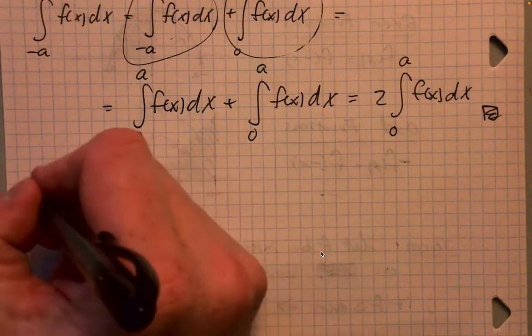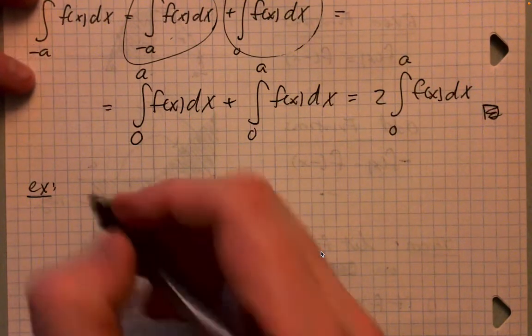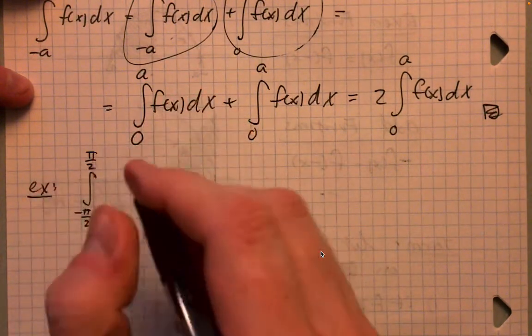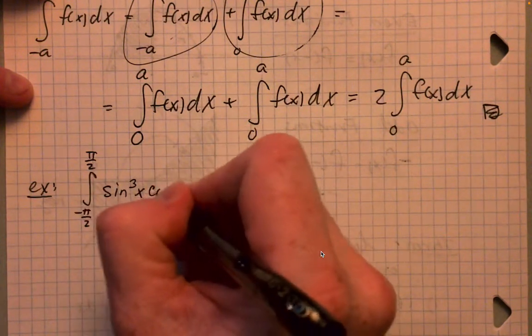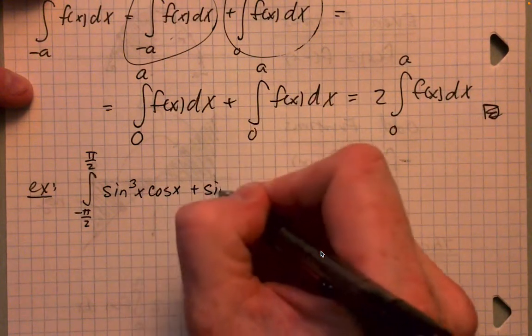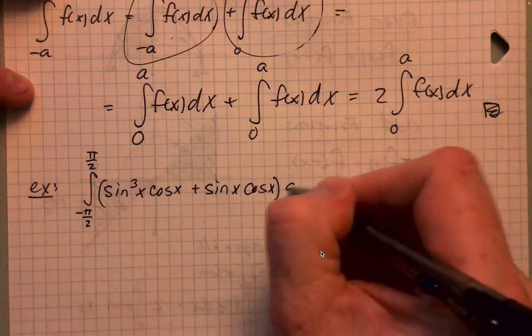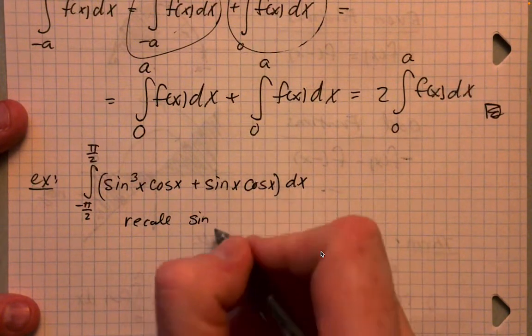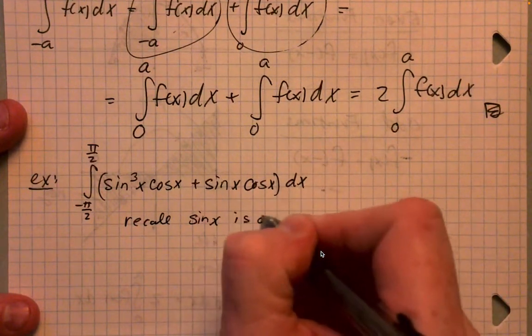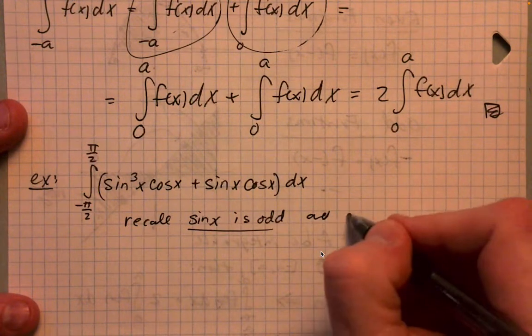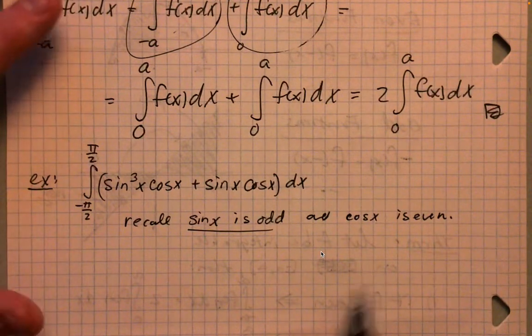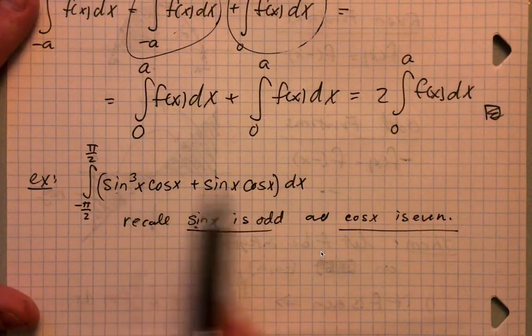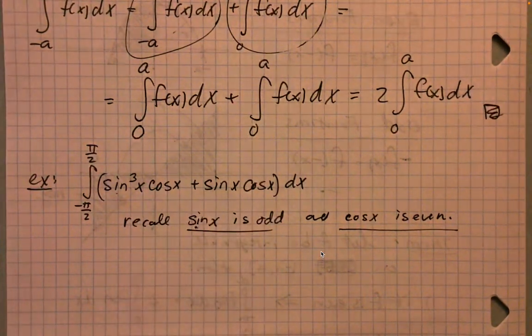Let's do an example here using this even-odd theorem. So definite integral from negative pi over 2 up to pi over 2 of this mess: sine cubed x cos x plus sine x cos x. So just recall that sine of x is an odd function, and cosine of x is even. So then, if sine of x is odd and cos of x is even, what is this? It's basically just a bunch of sines and cosines multiplied and added together. Can we determine whether it's even or odd?